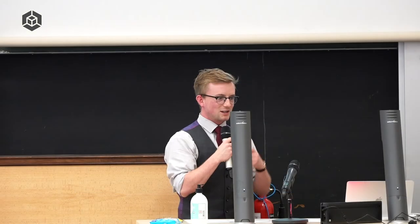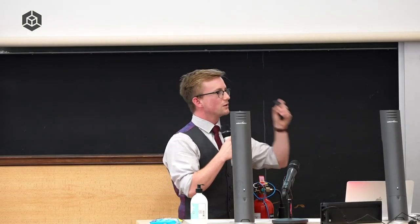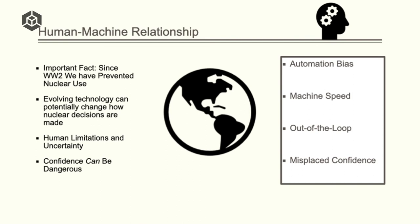So this is an incredibly important thing to remember. Finally, misplaced confidence is we think we have an amazingly powerful AI. We can do anything. And it makes us over-aggressive because we think we are just on top of the world there. And that can also, again, lead to aggressive action or action when we shouldn't have taken it.